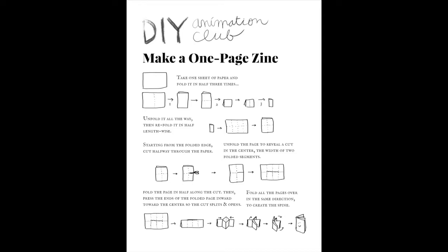So we're basically going to take a sheet of paper and fold it in half three times, and then we unfold it all the way and then refold it so that it starts to resemble a magazine or a little book. And don't get too worried about all these little pictures. I'll show you how.